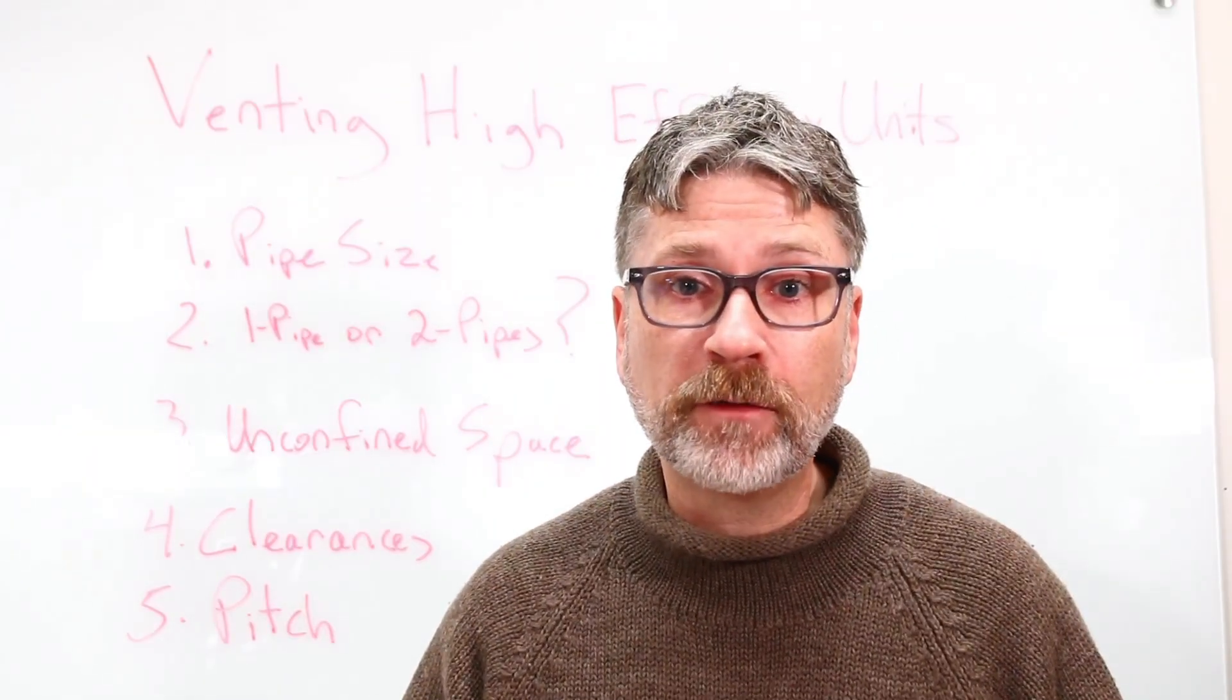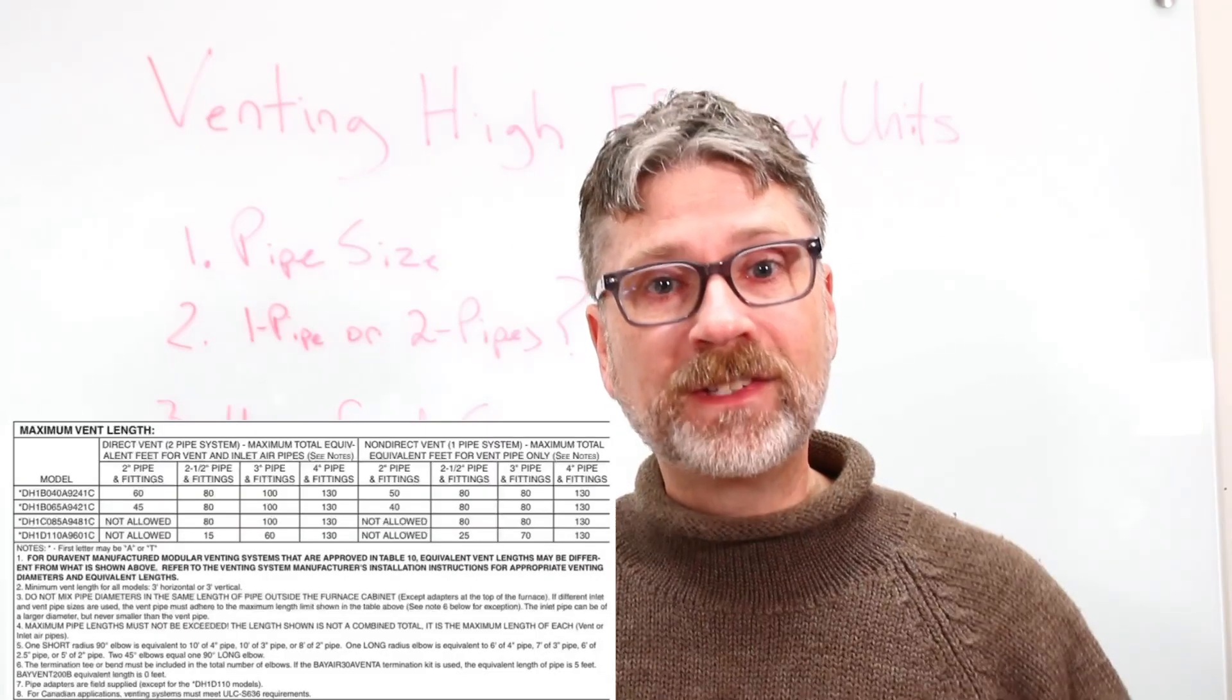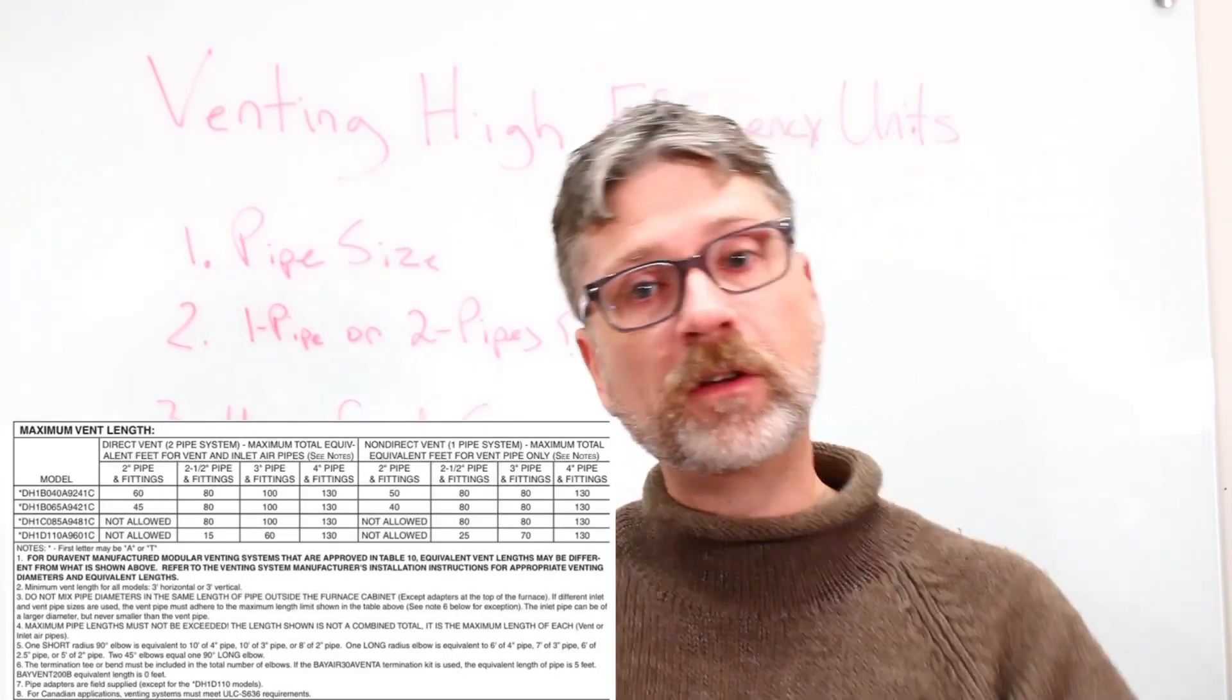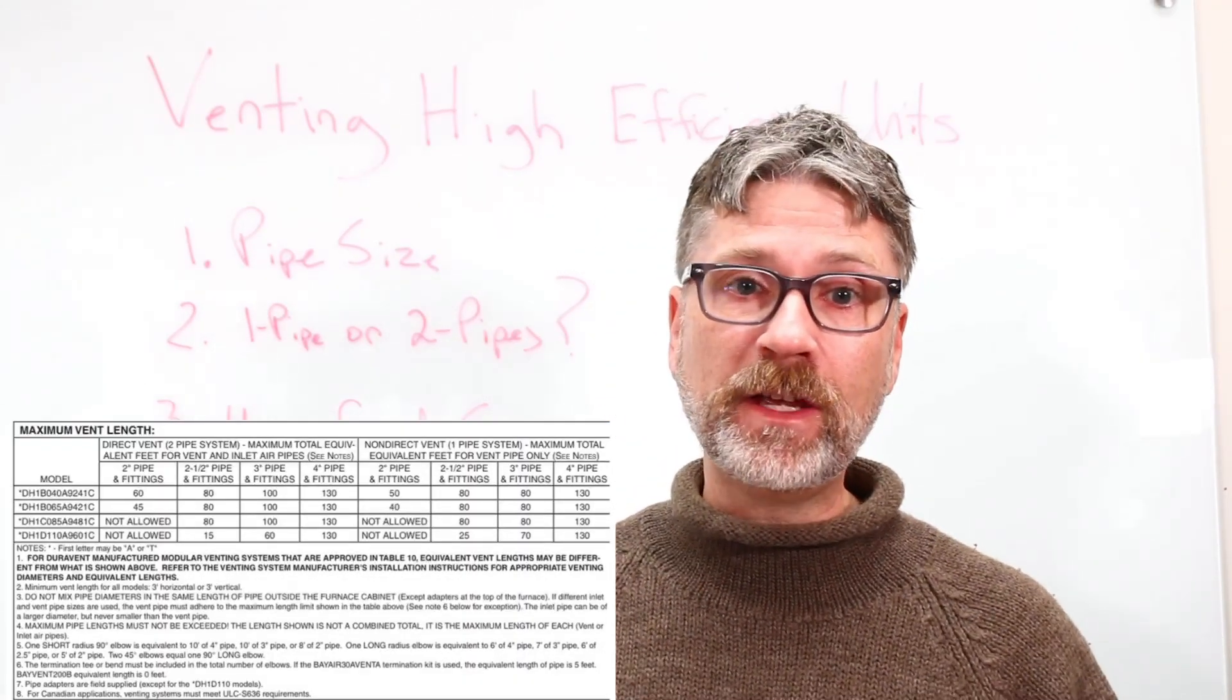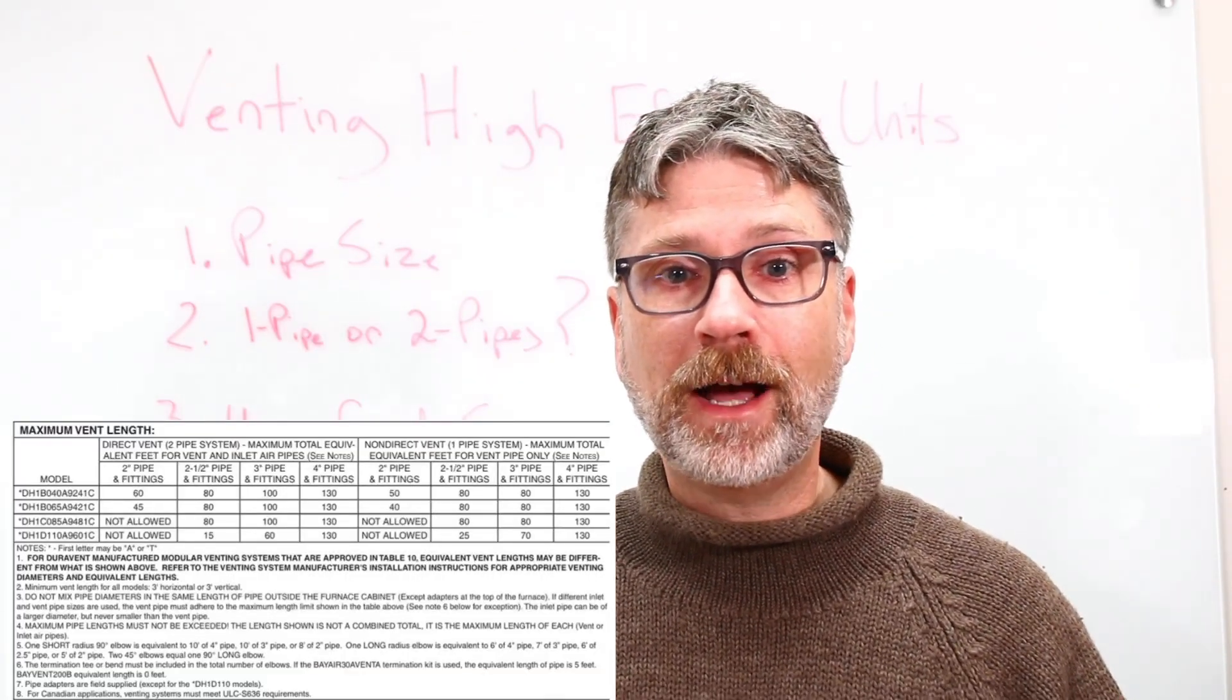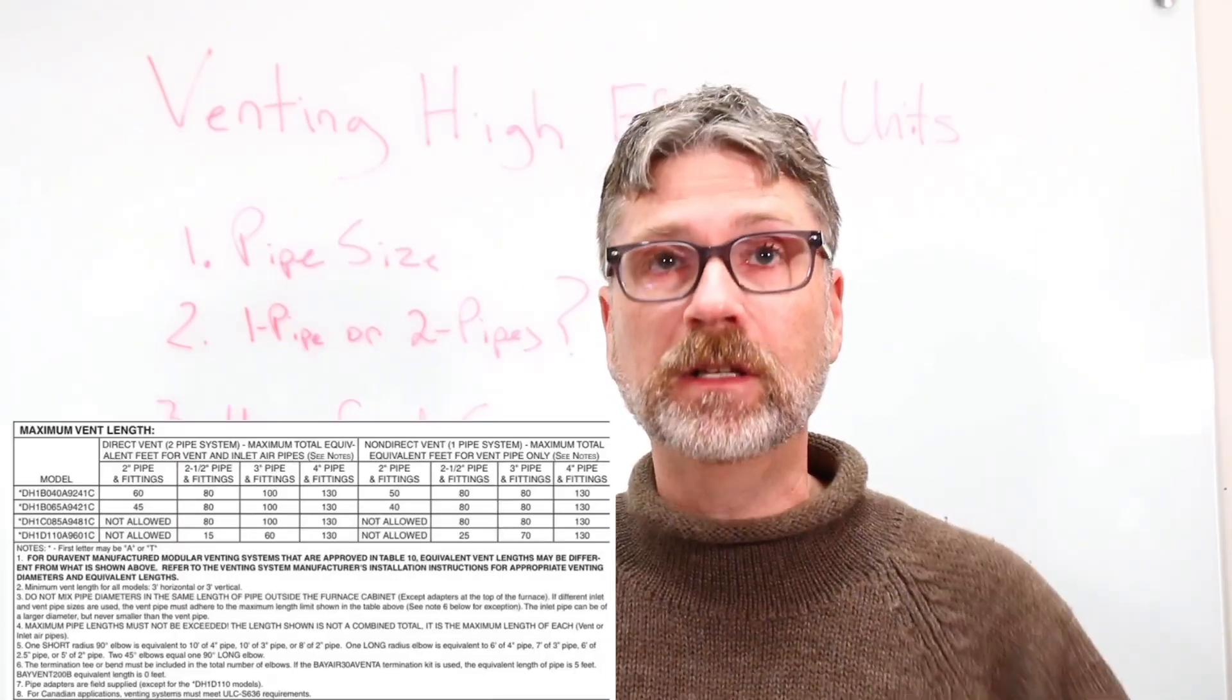There will be a chart in the installation manual helping you to decide. For example, I looked up a Trane furnace and found a chart, here I'll put it on the screen for you. The 65,000 BTU model requires a 3 inch pipe for a length of, for example, 85 feet. That includes adding 10 feet for each elbow used. Follow the chart closely. Out of the furnace, the pipe connections are only 2 inches, which means you must upsize to 3 inches immediately.